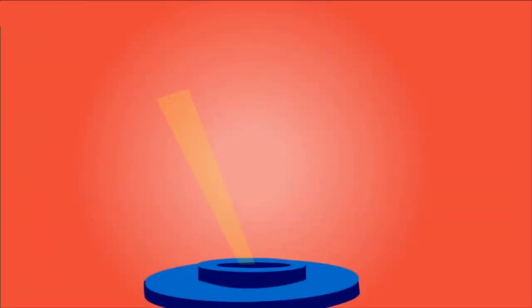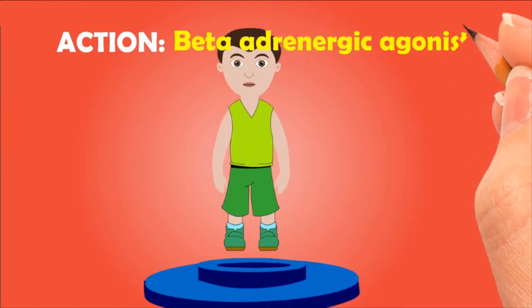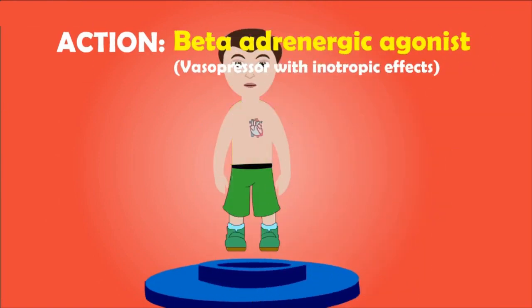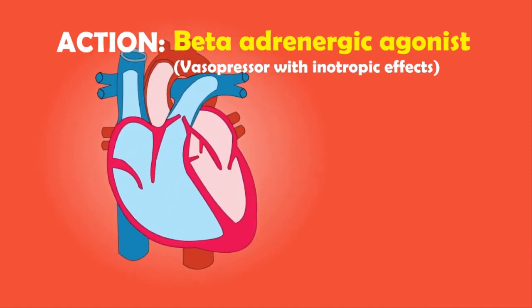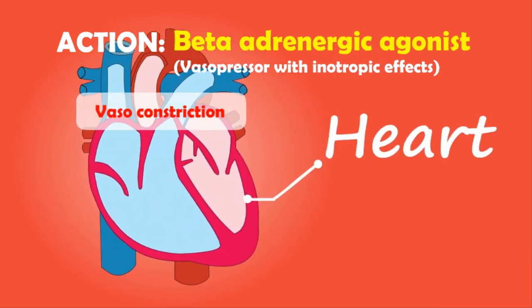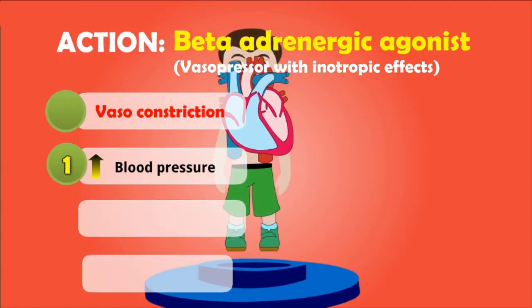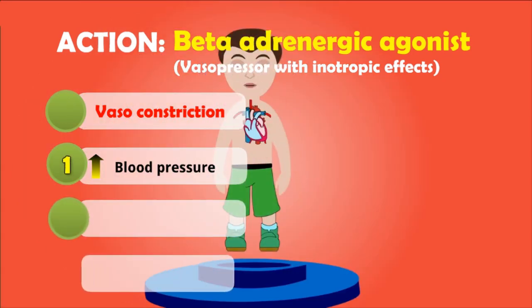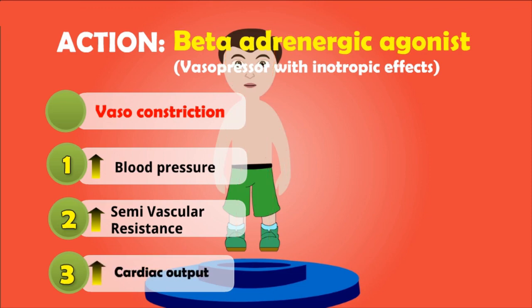The action of this drug is as a beta-adrenergic agonist. It will mainly act as a vasopressor with inotropic effect, causing vasoconstriction and increasing blood pressure, systemic vascular resistance, and cardiac output.